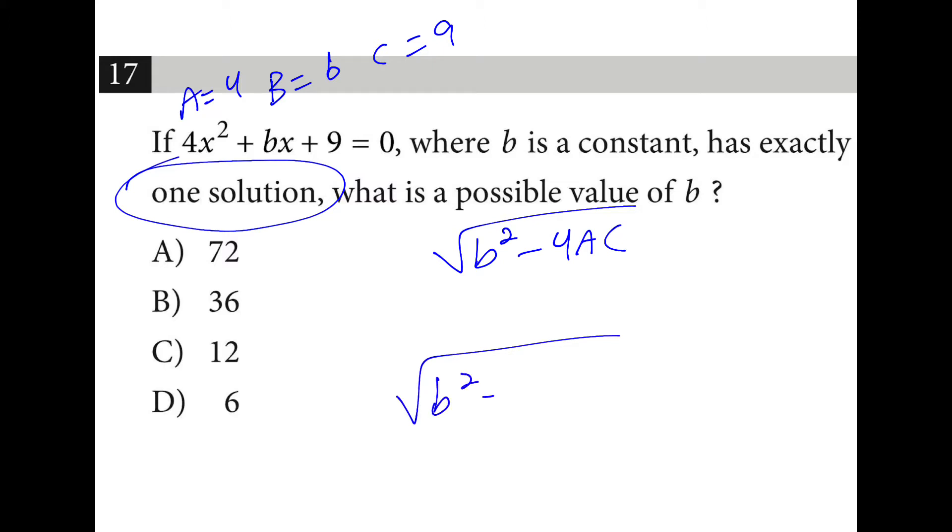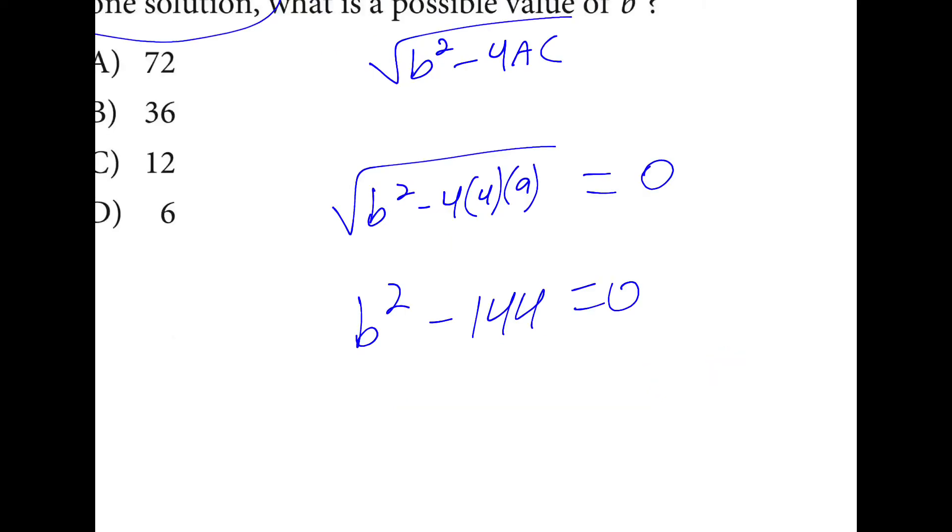So the square root of b squared minus four times four times nine is going to equal zero. Or in other words, b squared minus 144 equals zero. Or b squared is 144, or b is 12.